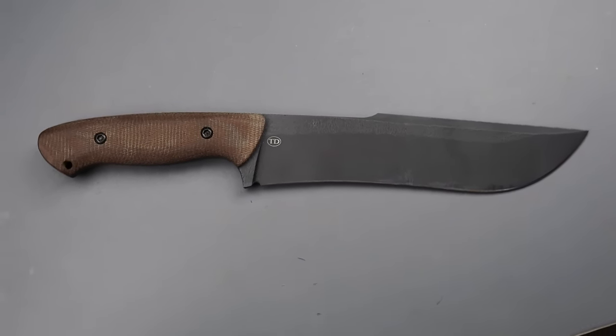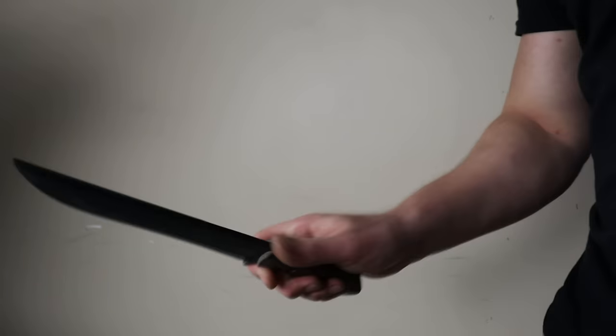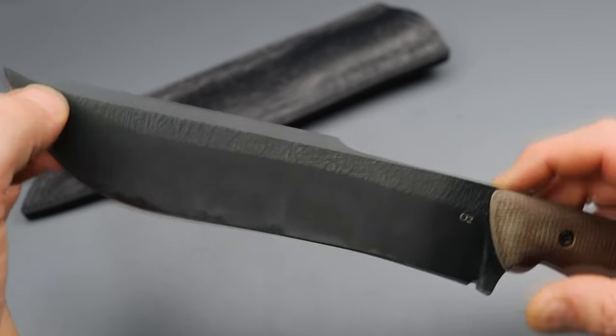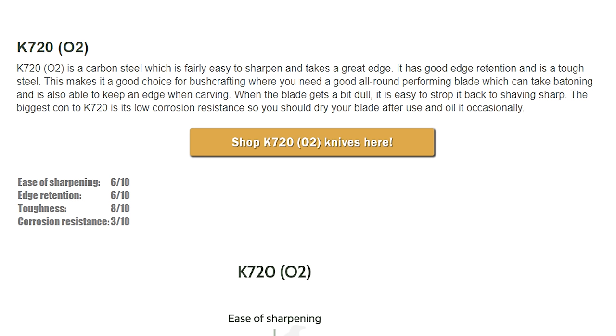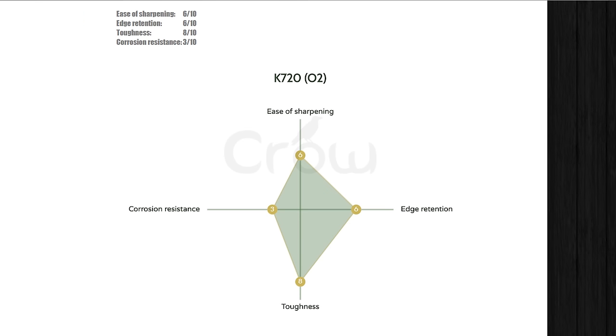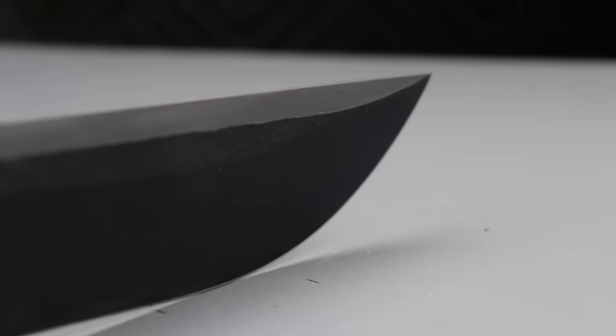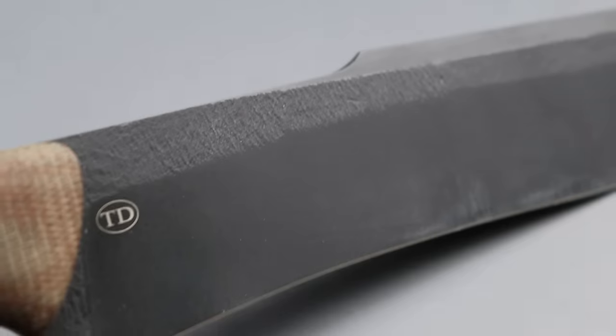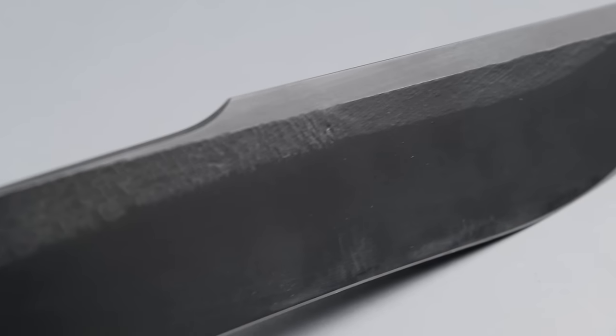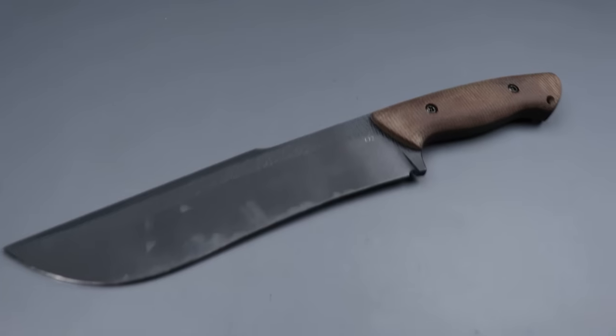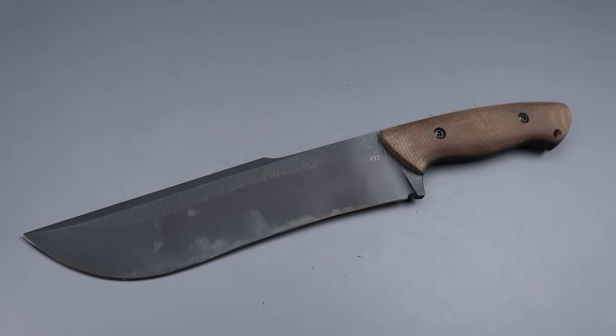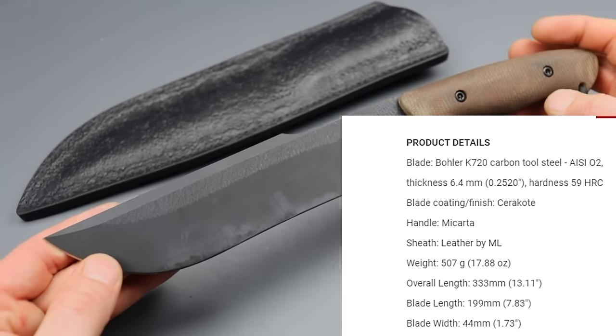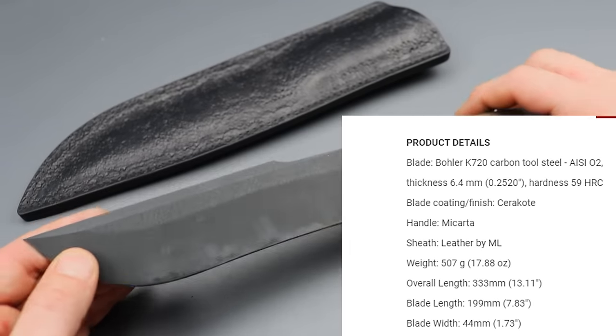It is an absolute behemoth. The blade is a quarter inch thick O2 tool steel or Bohler K720, which is a very high toughness steel with great wear resistance but with low corrosion resistance. It's coated so I'm not really worried about it, and even after I really use it hard I'm still not worried about the corrosion resistance. I want to test and sharpen it and really see how this heat treatment feels.